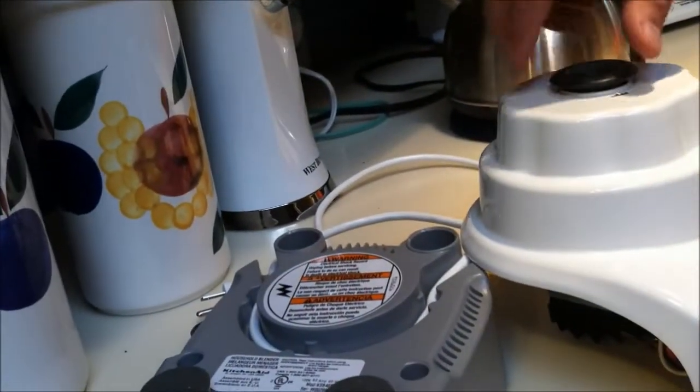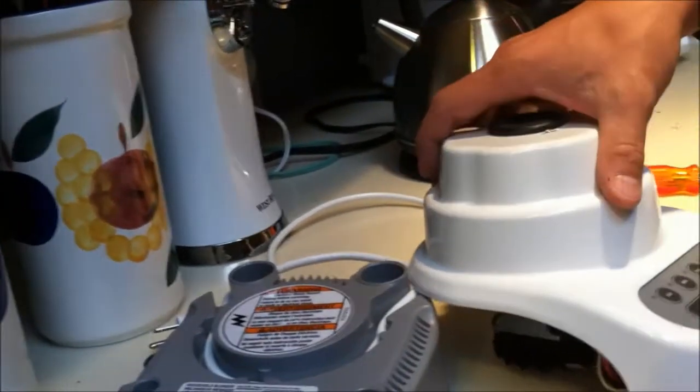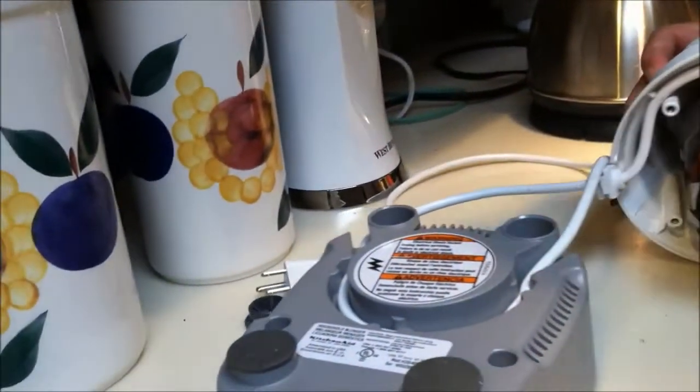And all you do is take the new one, which I have, I can't find it. But you just take the new one and you do it in the opposite direction. You can go hand tight because as soon as you start blending, it's going to tighten for you.